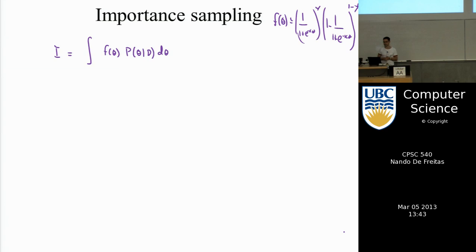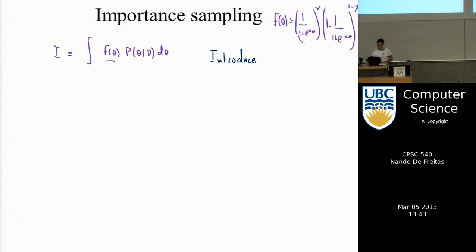Since we do not know how to sample from p of theta, we introduce a distribution q of theta that is easy to sample from — for example, a Gaussian with zero mean and some covariance. Von Neumann rewrote the integral as f of theta times p of theta given d divided by q of theta, times q of theta, d theta — simply multiplying and dividing by q of theta.